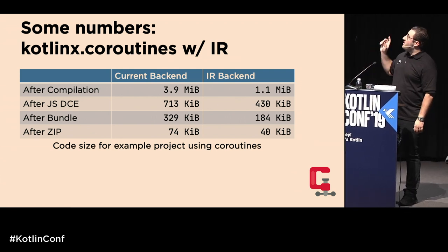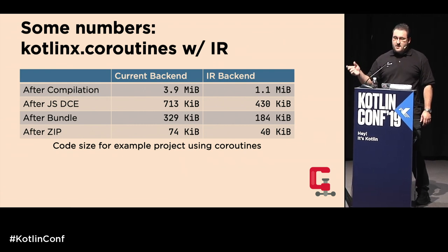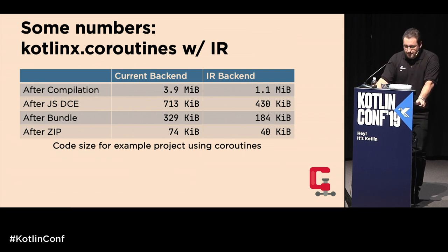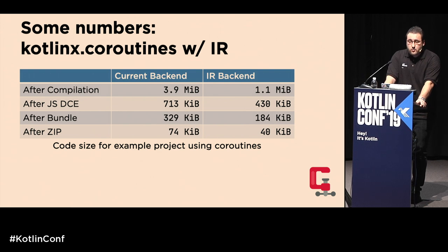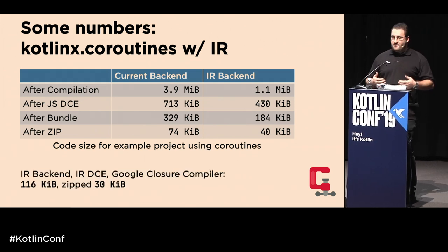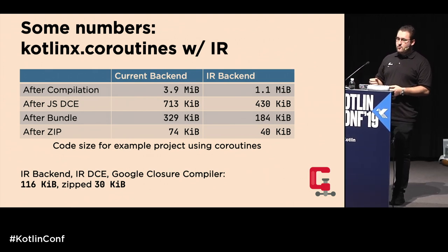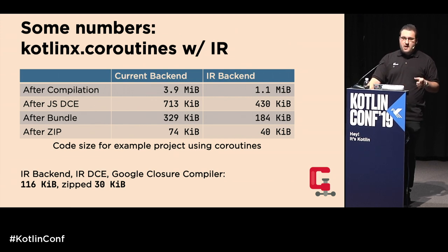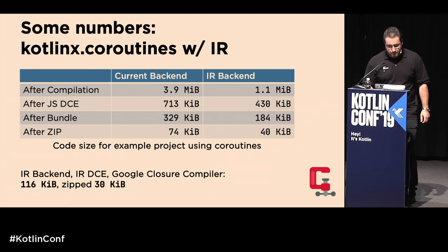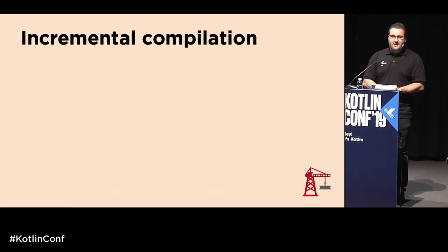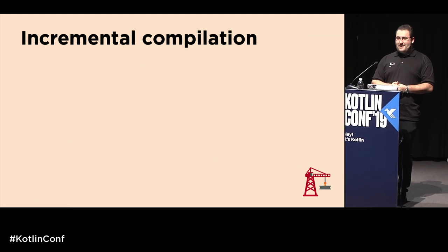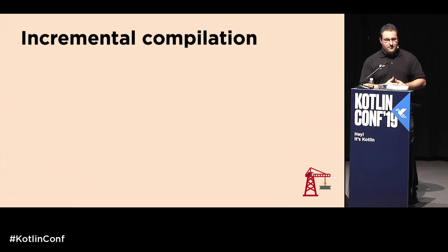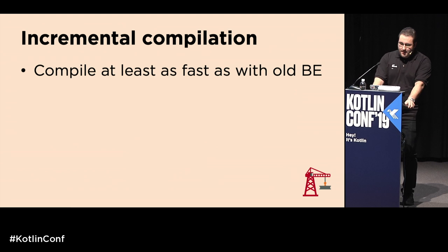The coolest result is that the new backend works extremely well with the Google Closure Compiler. Feeding code through the IR backend, then dead code elimination, then the Google Closure Compiler can push the zipped file size down to 30 kilobytes — compared to what was previously 3.9 megabytes. The team has also assured me that compilation speeds with the new backend will be at least as fast from scratch as the current backend — with parts already faster, and things only getting speedier.